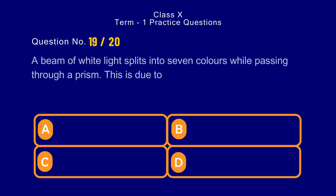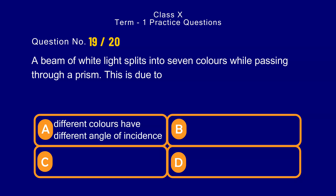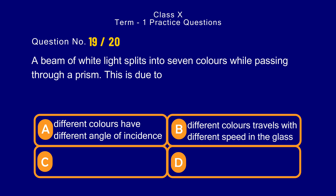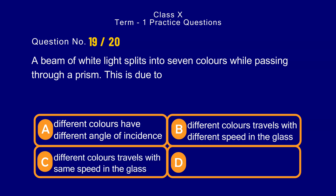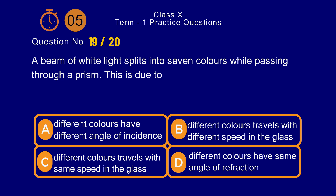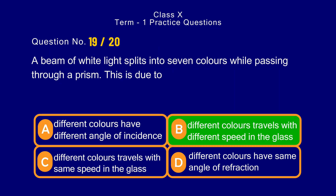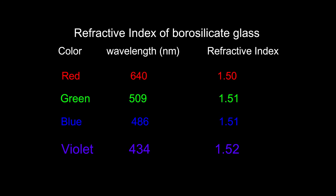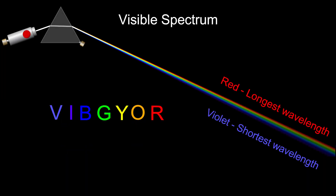Question number 19. A beam of white light splits into 7 colors while passing through a prism. This is due to — options: a) different colors have different angle of incidence, b) different colors travel with different speed in the glass medium, c) different colors travel with the same speed in the glass medium, d) different colors have the same angle of refraction. The correct answer is option b) different colors travel with different speed in the glass medium. Due to this, light gets split into 7 colors.